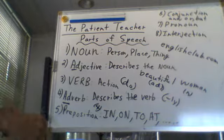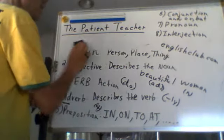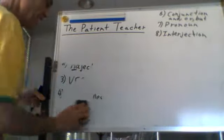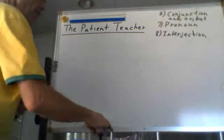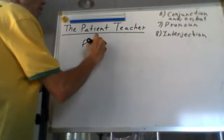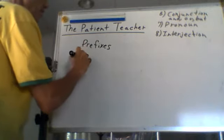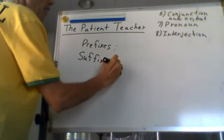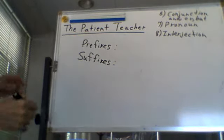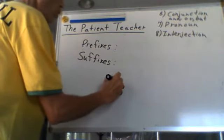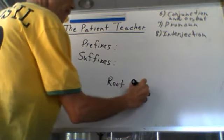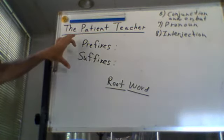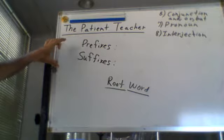The other thing we want to be aware of is what's called the prefix and suffix. These are things we add to what we call the root word, and you'll see them so often that it's important for you to be aware of and to recognize them.